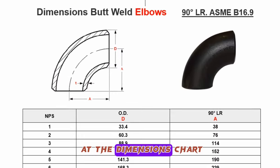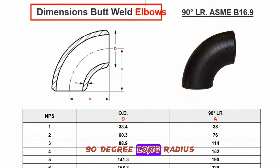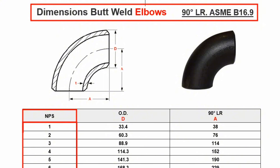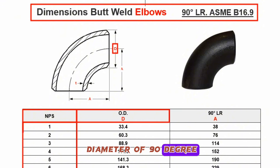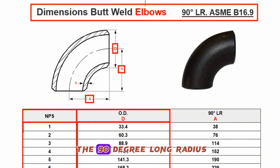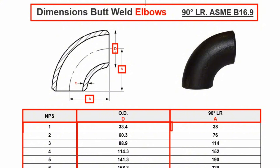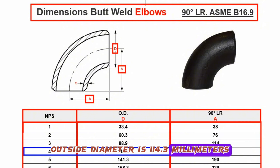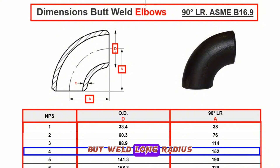Now let's look at the dimensions chart of the butt weld elbow 90-degree long radius. The NPS column shows nominal pipe size, the D column shows outside diameter, and the A column shows the center to end of the 90-degree long radius butt weld elbow. For nominal pipe size 4-inch, the outside diameter is 114.3 millimeters, and the center to end length is 152 millimeters.